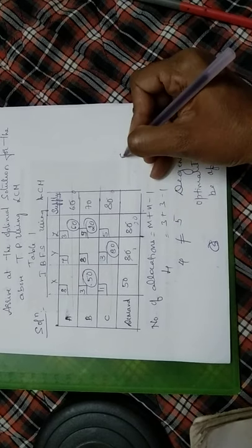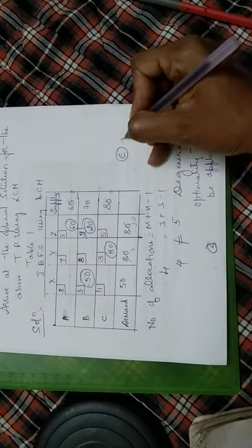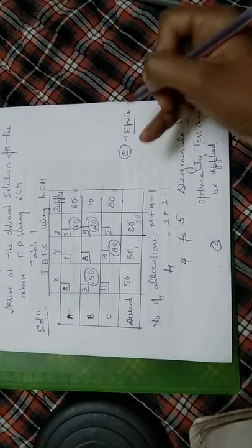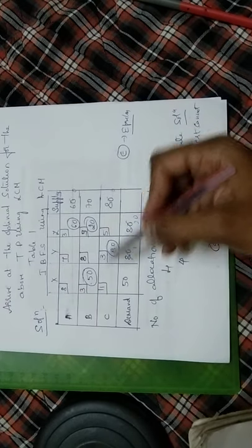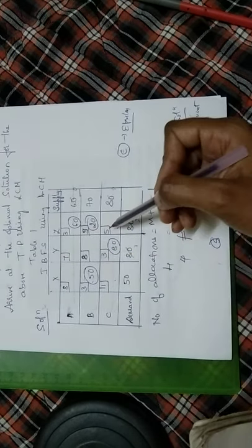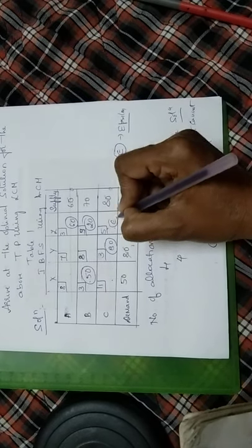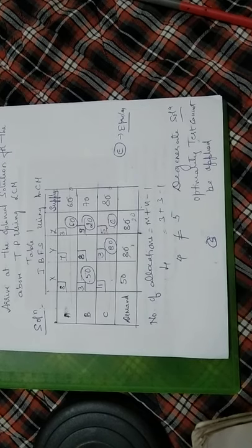We allot epsilon to the least cost cell. If you identify from among the unallocated cells, the least cost is 5. So we allocate epsilon and conclude. This particular table cannot be proceeded further with the optimal solution. Optimality test cannot be done here. This is about this problem. Thank you.